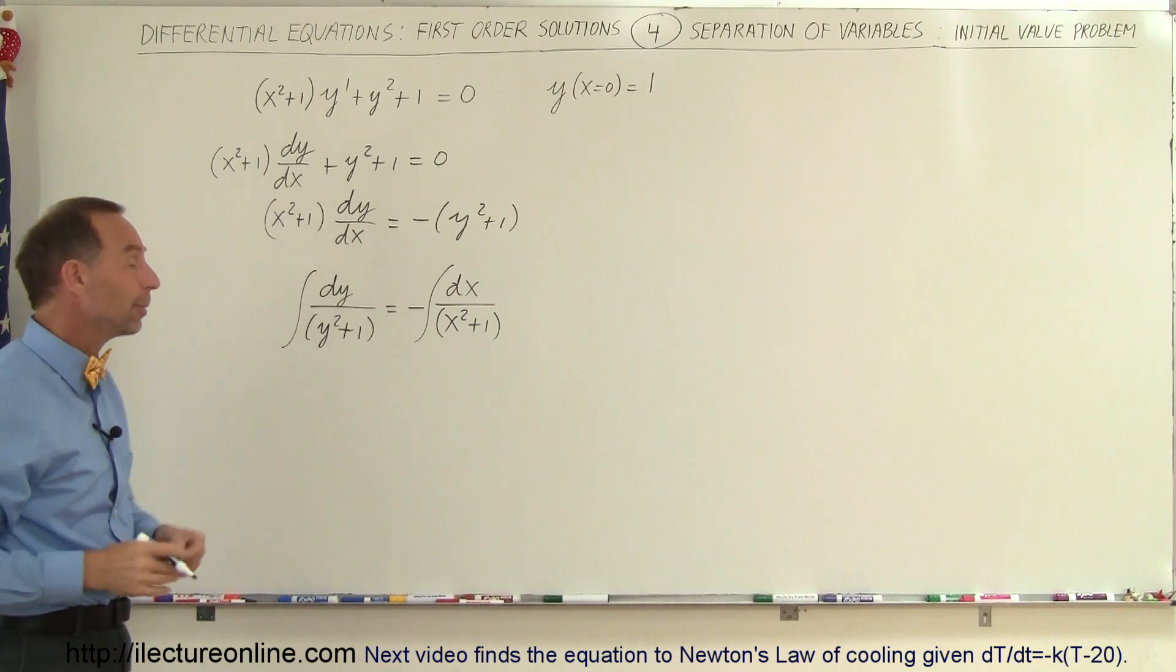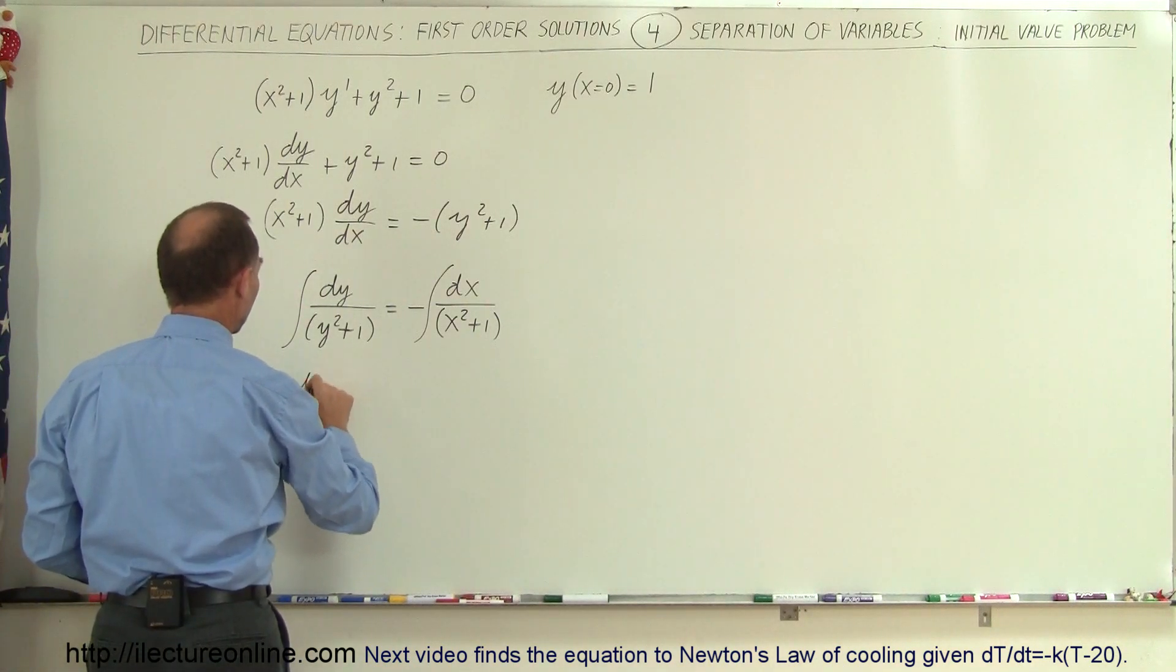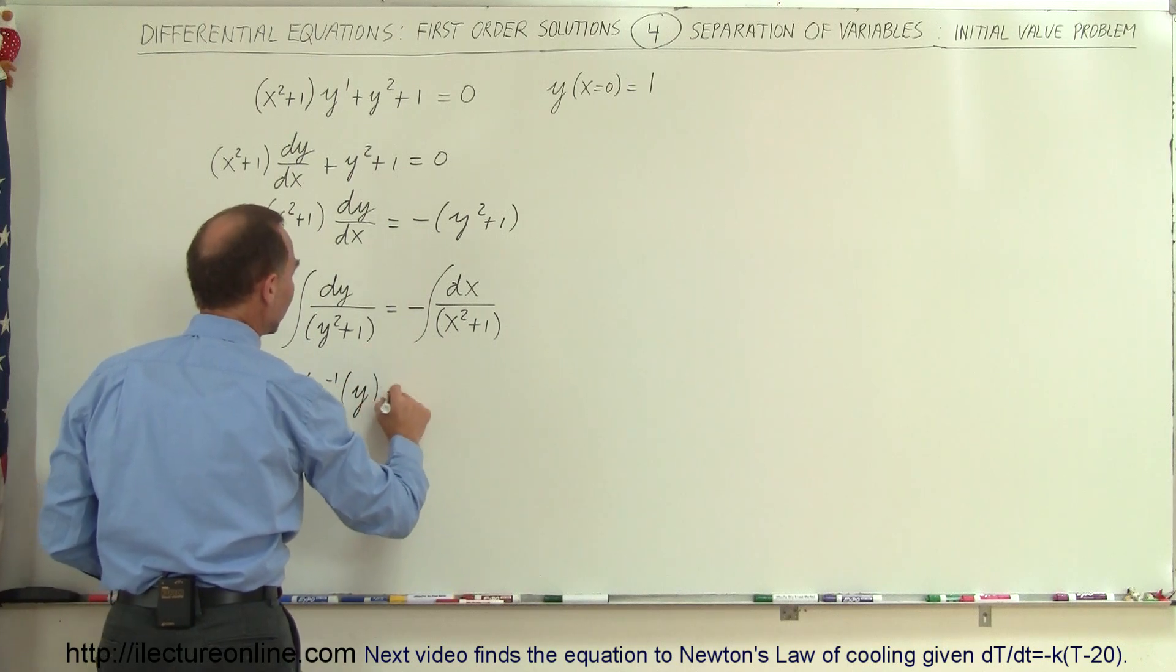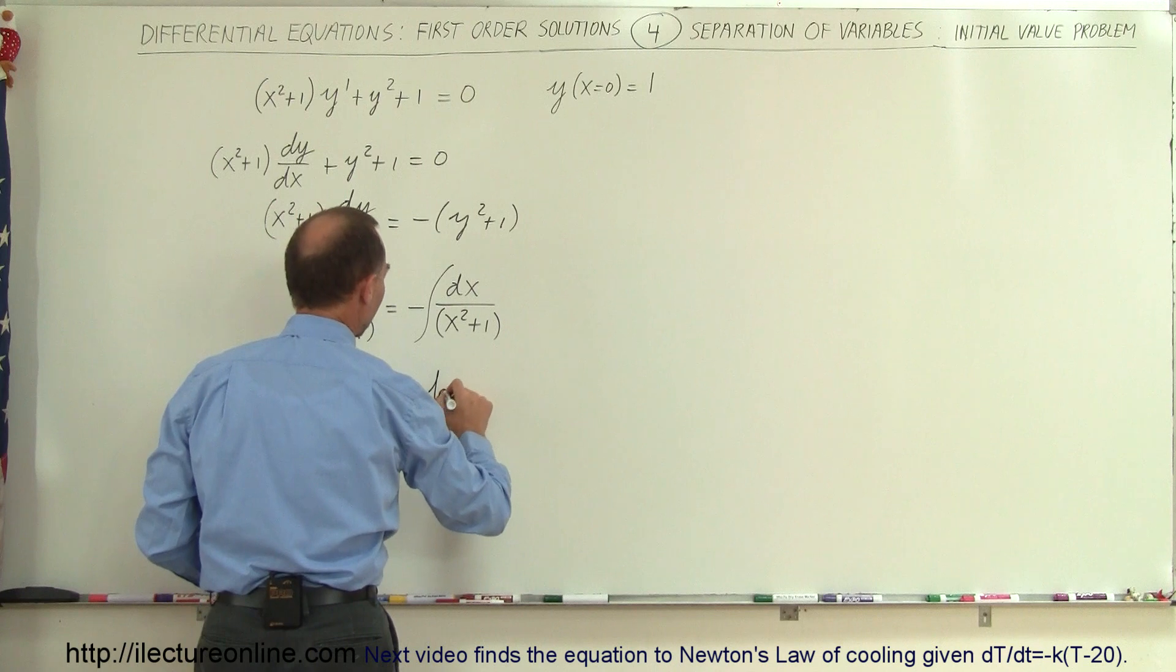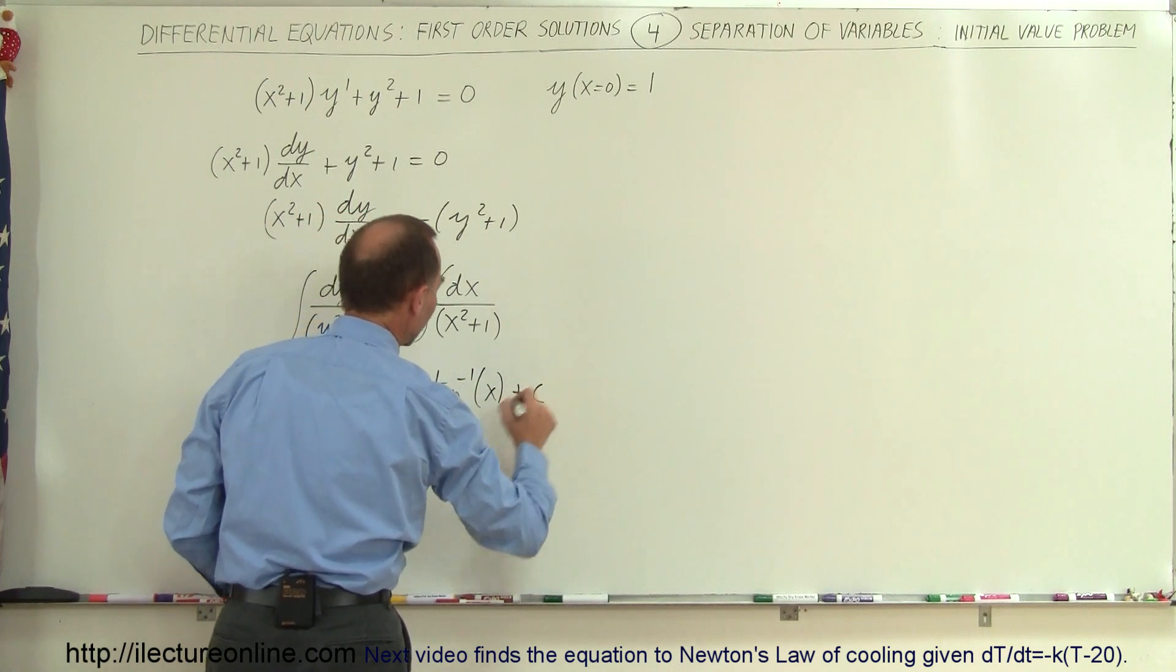The integral of that can be written as the arctangent of y, so arctan(y) = -arctan(x) + a constant of integration.